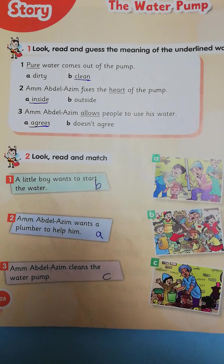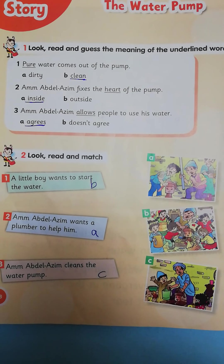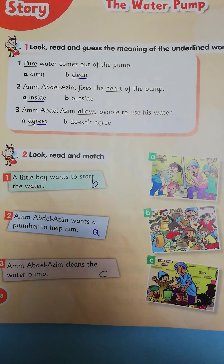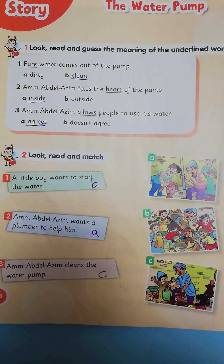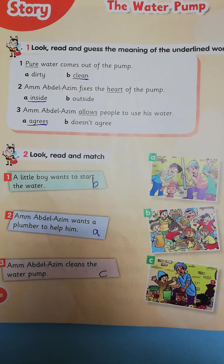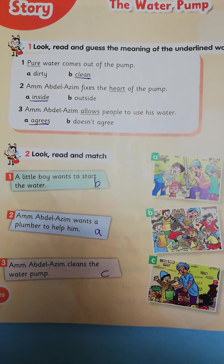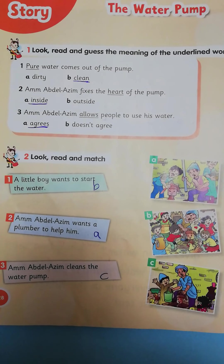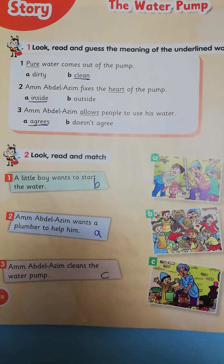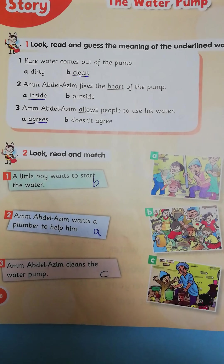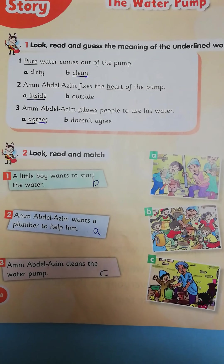Let's move to another exercise. Exercise 2: Look, read, and match. Look at these pictures and try to match with the right sentence. Number 1: A little boy wants to start the water — which picture? Picture B. Correct. Number 2: Am Abdul Azim wants a plumber to help him — which picture? Picture A.